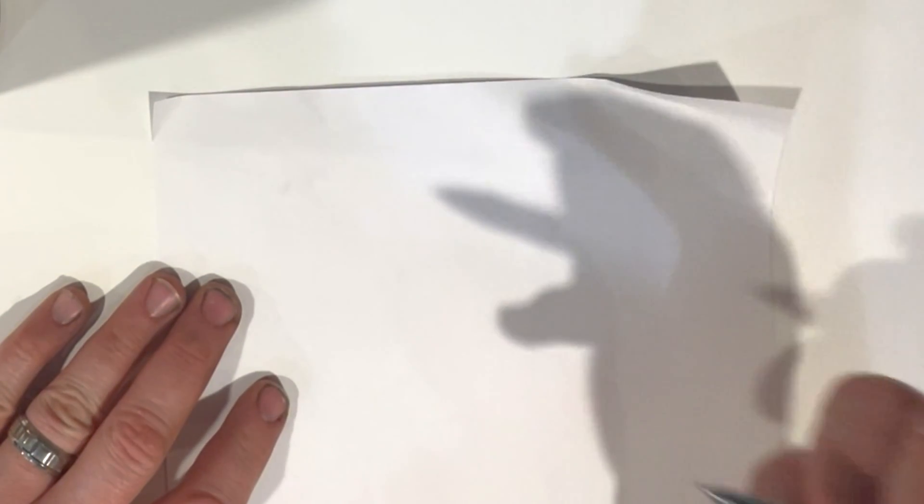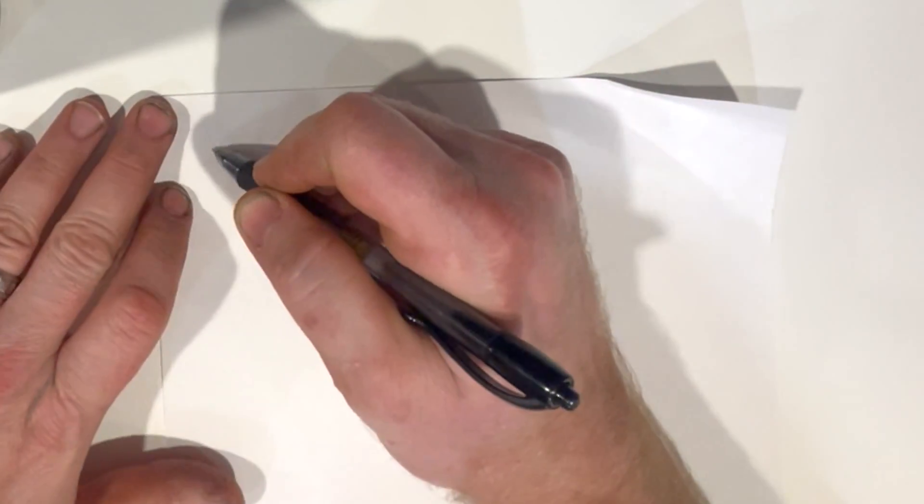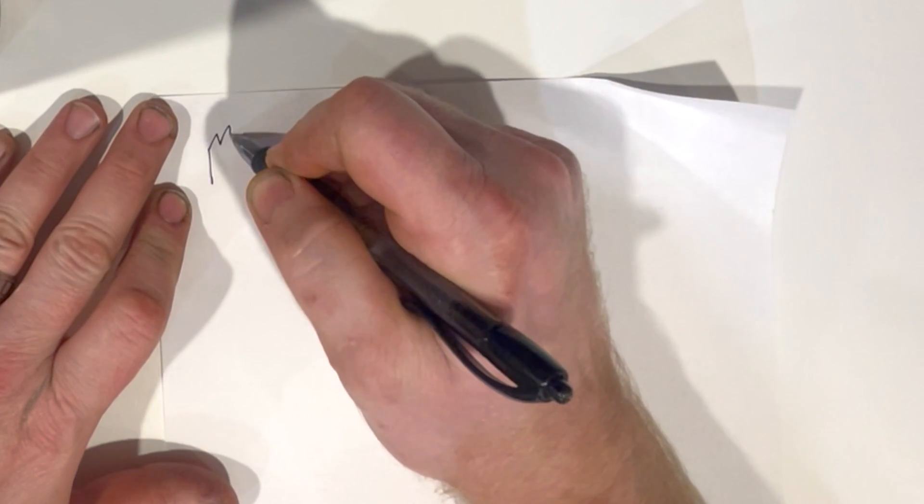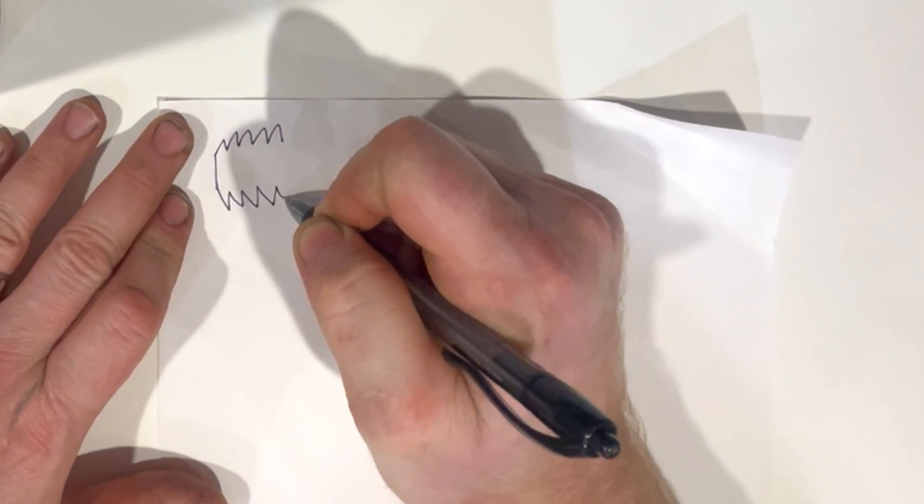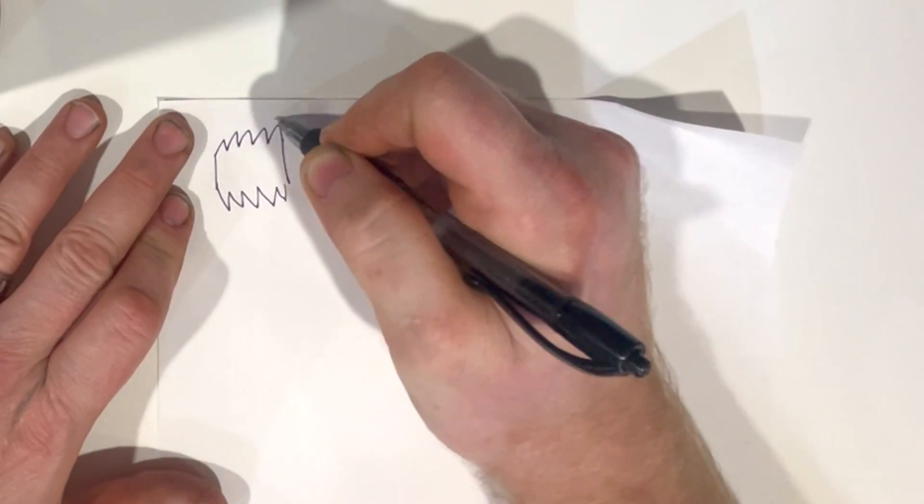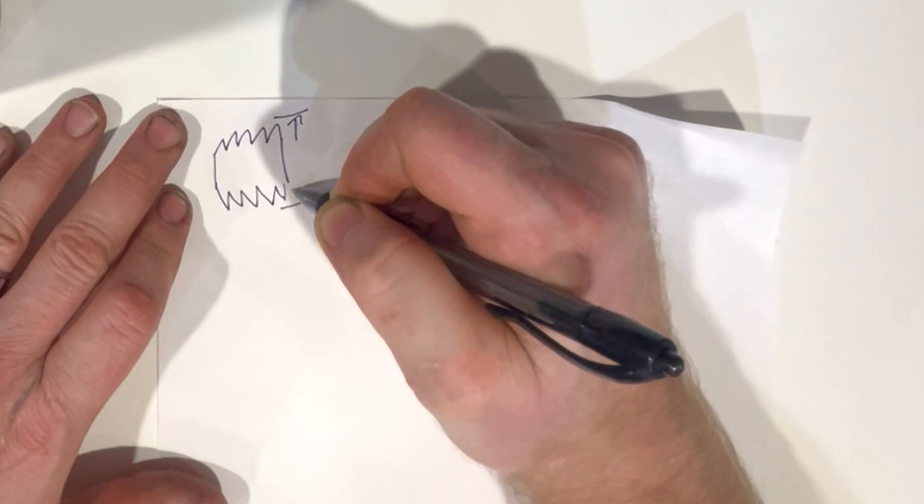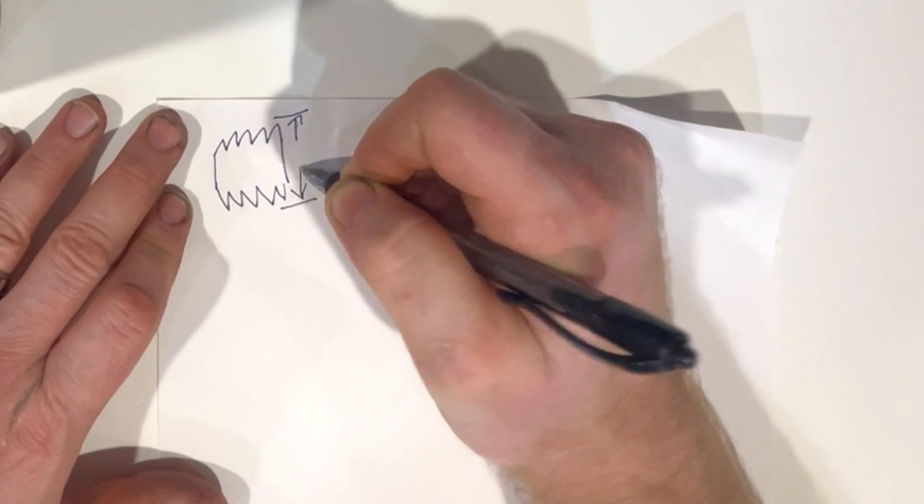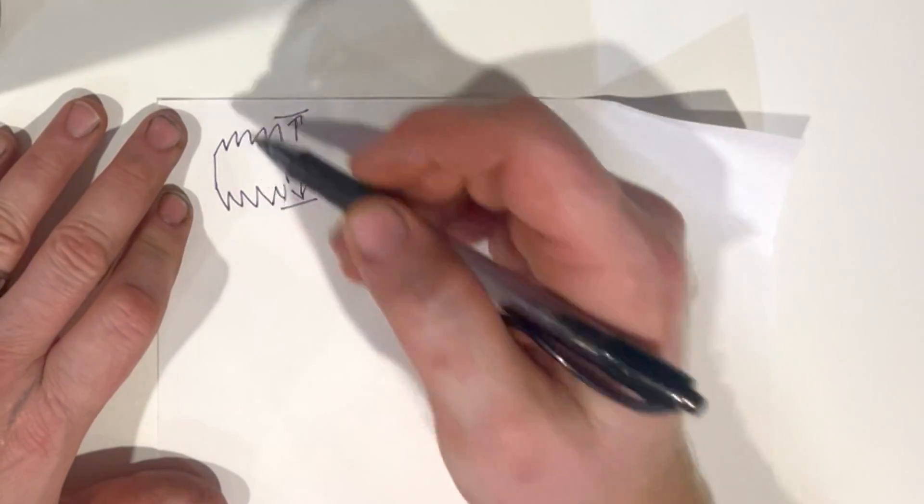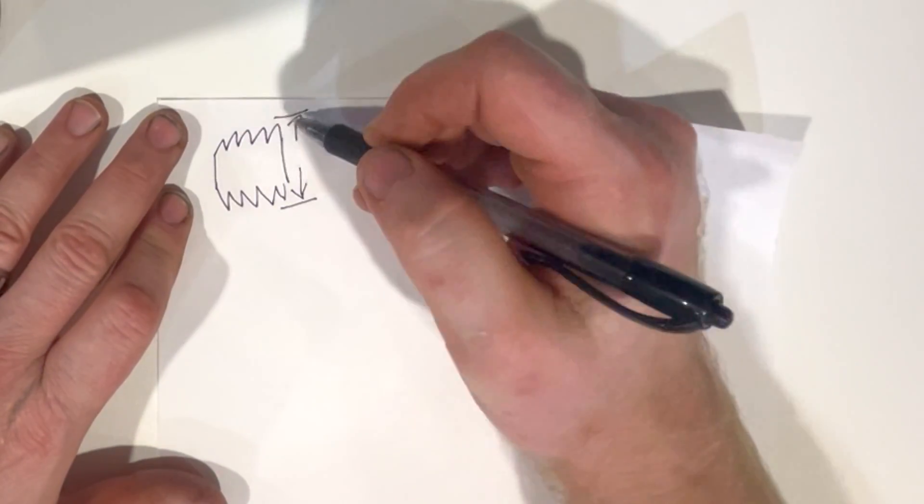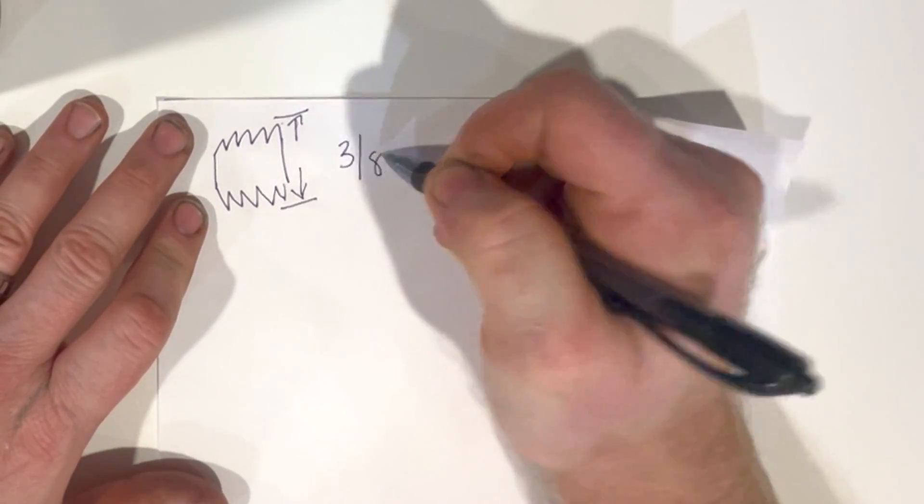Let's talk about how we identify threads. We have the first number which is on the bottom here, its diameter measured by the male portion of the threads, not the female portion which would be a nut. This would be the bolt, this diameter here. Let's say this is three-eighths of an inch.